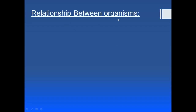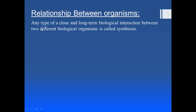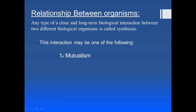Now let's study the relationship between parasite and host. Any close and long-term biological interaction between two different organisms is called symbiosis. This interaction may be one of the following types. First, mutualism — a type of symbiosis in which both organisms are benefited. Both of them get benefit, and it is called mutualism.